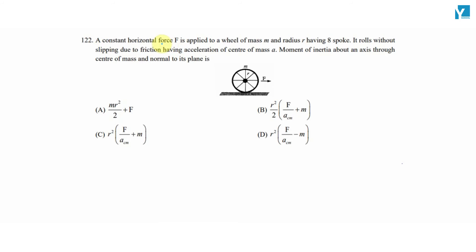A constant horizontal force F is applied to a wheel of mass M and radius R having 8 spokes. It rolls without slipping due to friction having acceleration of center of mass A. Moment of inertia about an axis passing through the center of mass and normal to its plane.